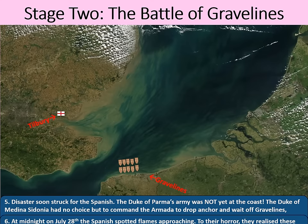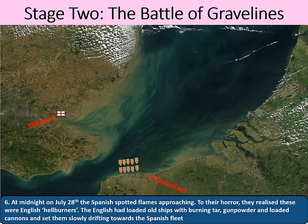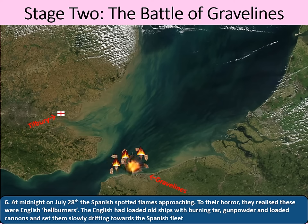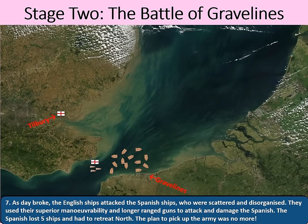It was time for the English navy to strike. At midnight on July 28th, the Spanish spotted flames approaching — to their horror, they realised these were English hellburners. The English had loaded old ships with burning tar, gunpowder, and loaded cannons, and set them slowly drifting towards the Spanish fleet. As day broke, the English ships attacked the scattered and disorganised Spanish ships, using their superior manoeuvrability and longer-range guns. The Spanish lost five ships and had to retreat north. The plan to pick up the army was no more.